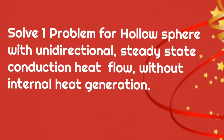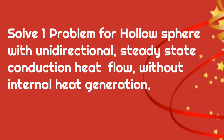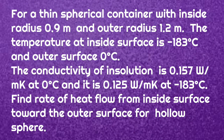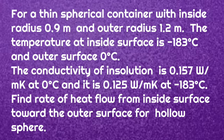We will solve a problem for a hollow sphere with unidirectional steady state conduction heat flow without internal heat generation. For a thin spherical container, inside radius 0.9 meter and outer radius 1.2 meter. The temperature at the inside surface is minus 183 degree Celsius and at the outer surface is 0 degree Celsius. The conductivity is 0.157 W/m·K at 0°C and 0.125 W/m·K at minus 183°C. Find the rate of heat flow from the inside surface toward the outer surface.